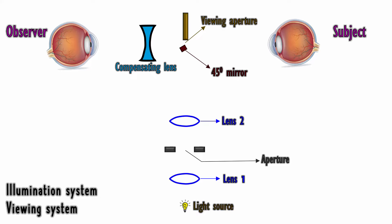The illumination system consists of a light source, an aperture, two convex lenses, and a 45-degree mirror. The viewing system consists of the viewing aperture and a compensating lens.